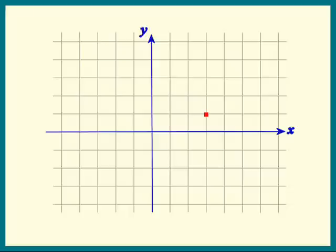To get its first coordinate, we start at the origin and we count one unit, two units, three units, and we're right under the point.